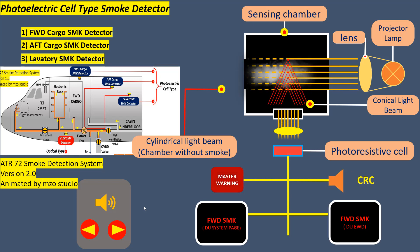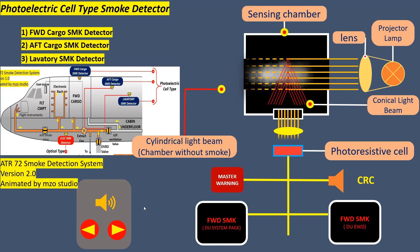As soon as smoke penetrates into the sensing chamber, it influences the light beam, which deflects and diffuses it. A conical refraction is produced and the photo resistive cell is reached by light. As long as there is smoke in the sensing chamber, smoke diffracts the light and the photo resistive cell keeps the warning light on.